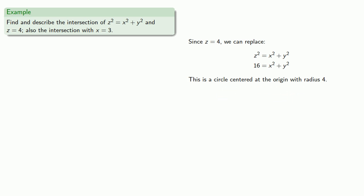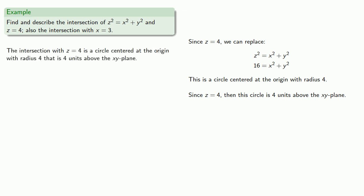We see that this is a circle centered at the origin with a radius of 4. We might go a bit further. Since z is equal to 4, this circle is 4 units above the xy plane. So we might say the intersection with z equals 4 is a circle centered at the origin with radius 4 that is 4 units above the xy plane.